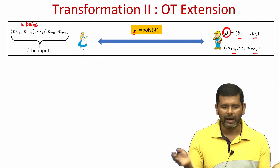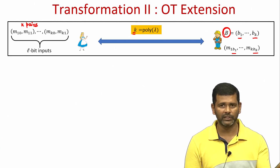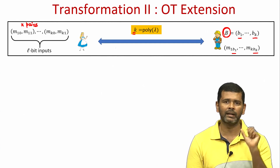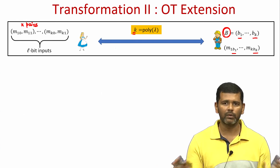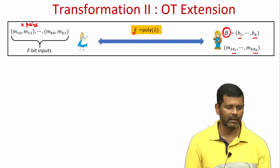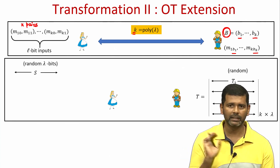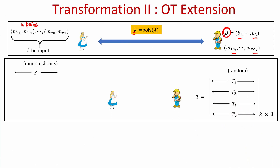One way of doing this is that Alice and Bob run k number of OT instances, one for each pair. But we do not want that — we want to run only lambda number of OT instances and still get this done. So, how? Imagine for the moment that we have a magical mechanism; how exactly it is implemented is the whole crux of transformation 2, but first let us understand the requirements of this magical mechanism.